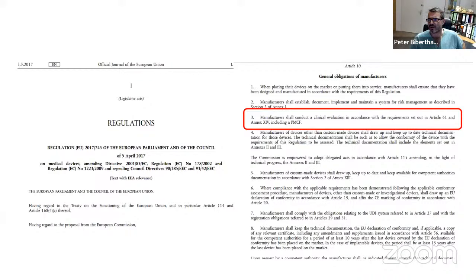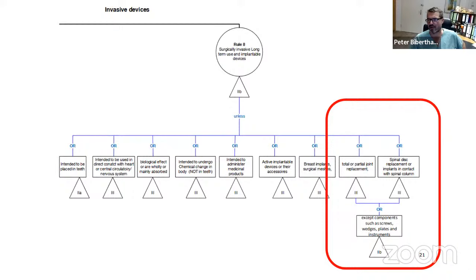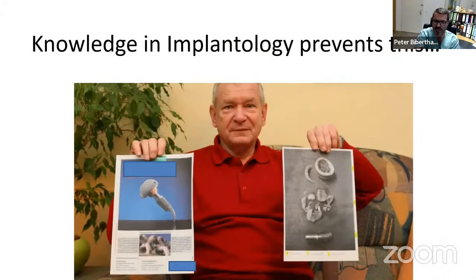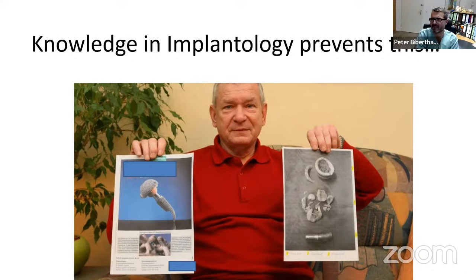By this, the European regulation created a new regulation about medical devices — the so-called MDR. What they want is that implants which are at least class 2B or 3 be tested by clinical studies or biological safety studies, to prevent what I showed with that plate. And even more important: endoprostheses where the head-to-shaft connection is breaking — knowing about implantology keeps you out of trouble.